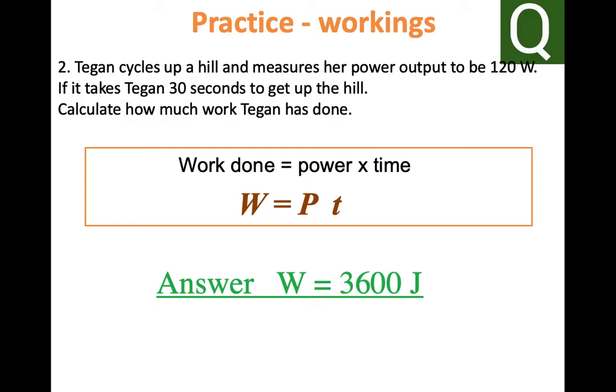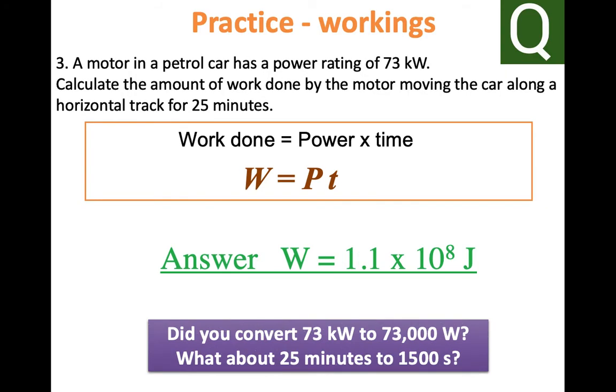And for question three, work done is power times time. In this case, work done is 1.1 times 10 to the power 8 joules.